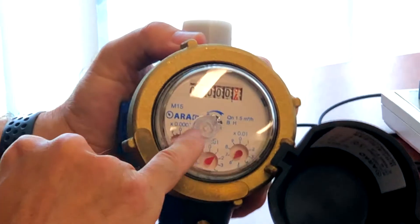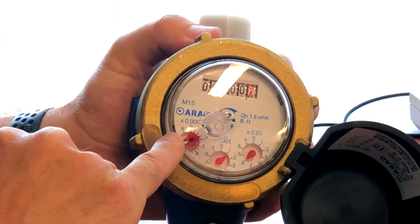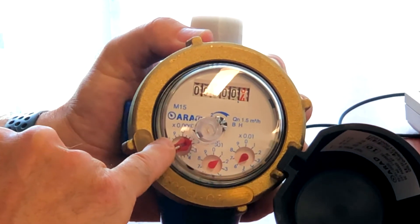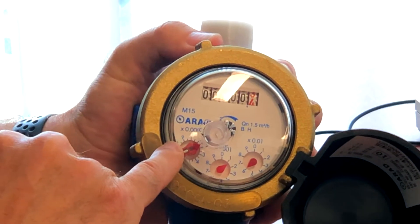Okay, as you can see where I removed the pulse cable, it's situated next to the leftmost red dial. Now what happens is when that red dial rotates, the water meter outputs one pulse. So how do we work out how many liters per pulse is generated from this water meter?